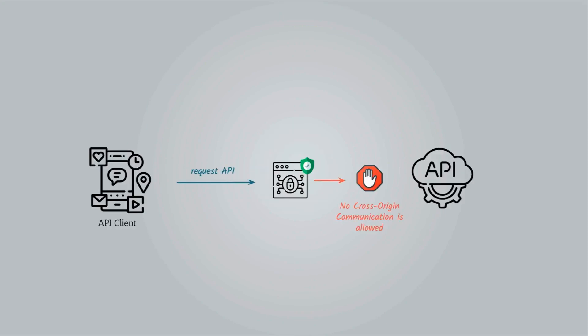Even though there are certain things you can do with SOP, such as embed others' content into your website, the policy is mostly restrictive and we need a way to relax it. I want my frontend to talk to my other API — why do I keep getting this warning? The solution is CORS: cross-origin resource sharing.